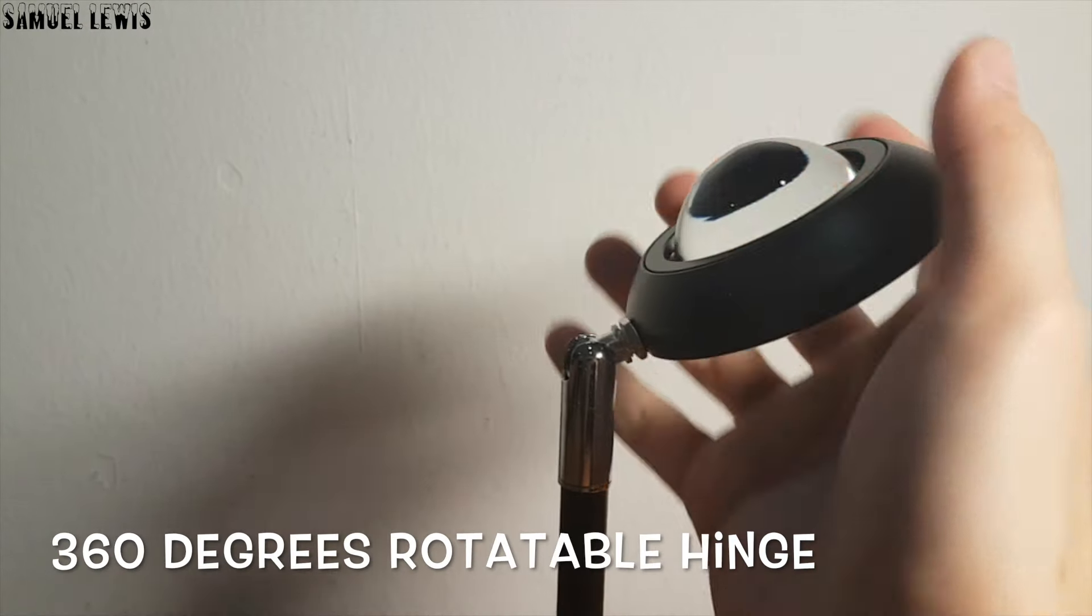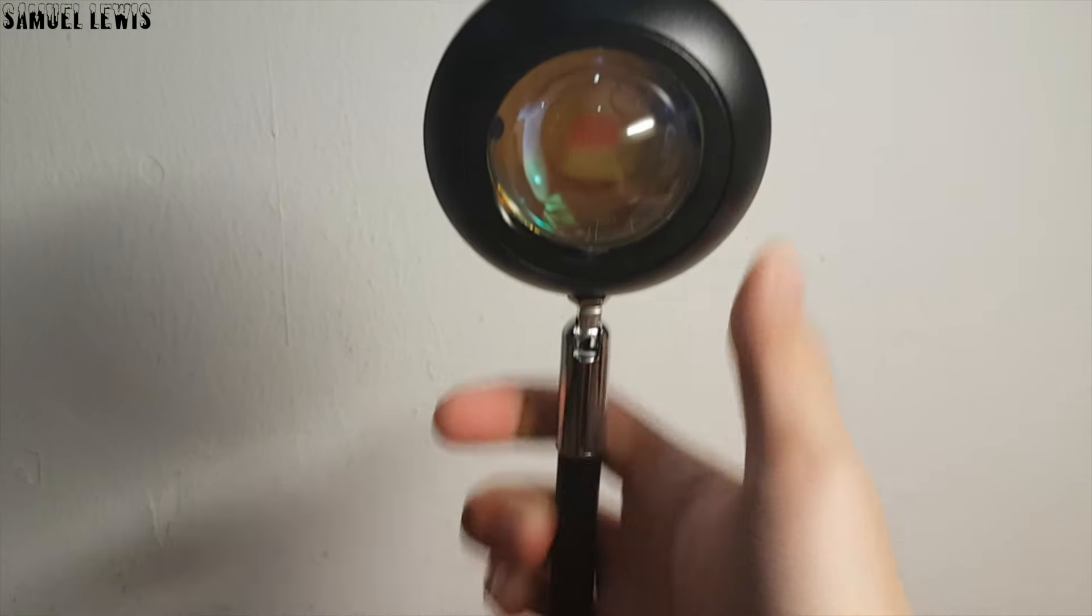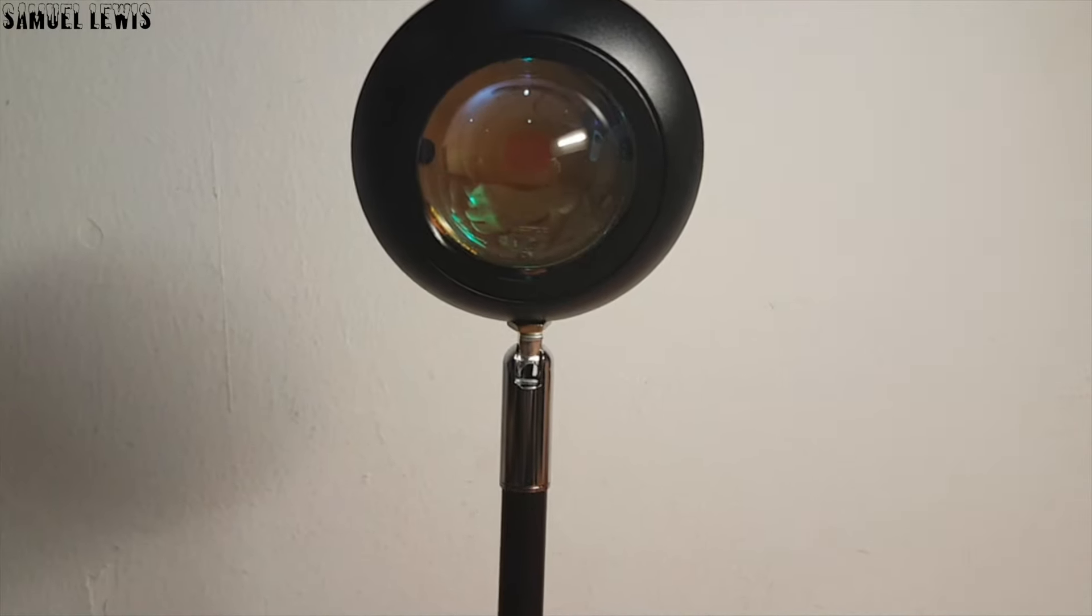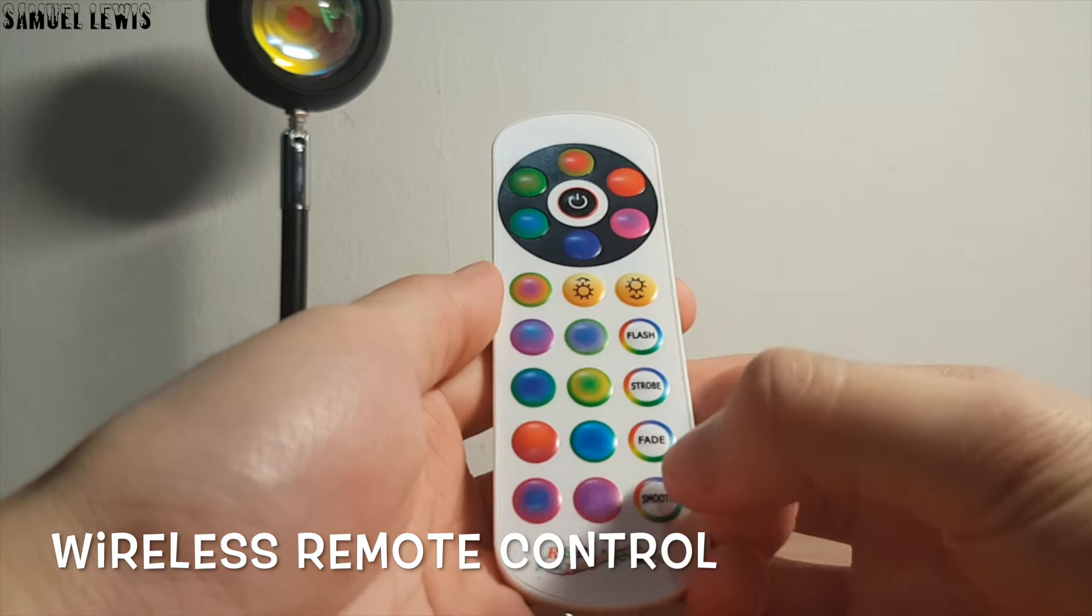The lamp has a 360 degrees rotatable hinge all around, so you can turn the lamp to the perfect angle you desire, just like what I am doing here. A wireless remote control is provided to allow you to change and adjust the lamp's lighting settings like color and light effects.